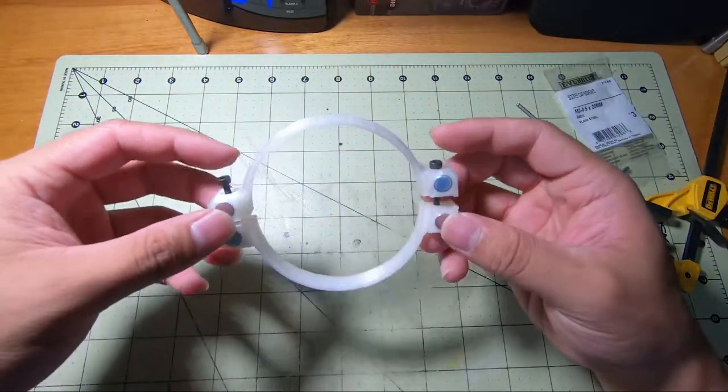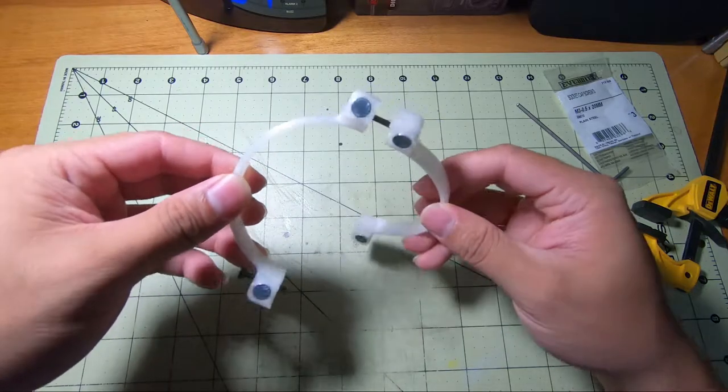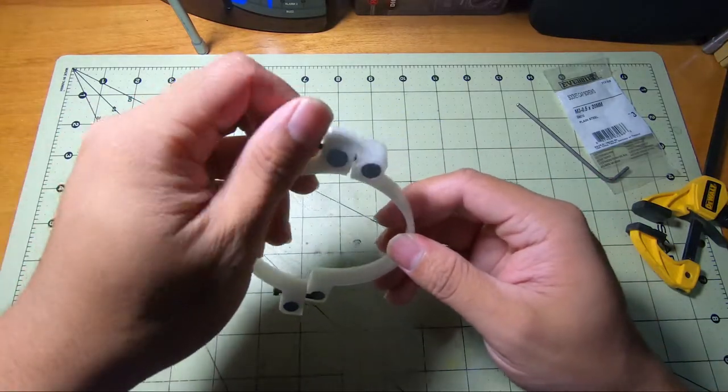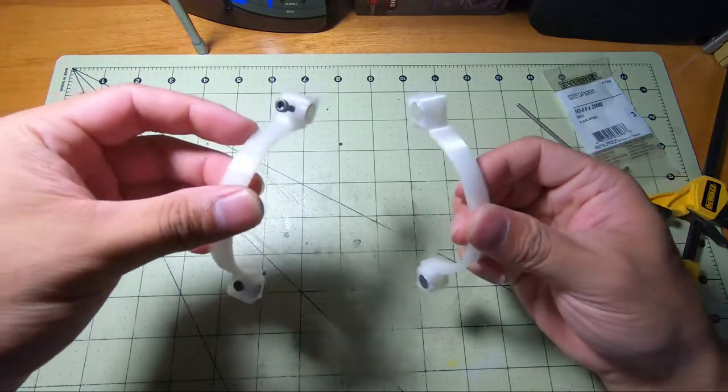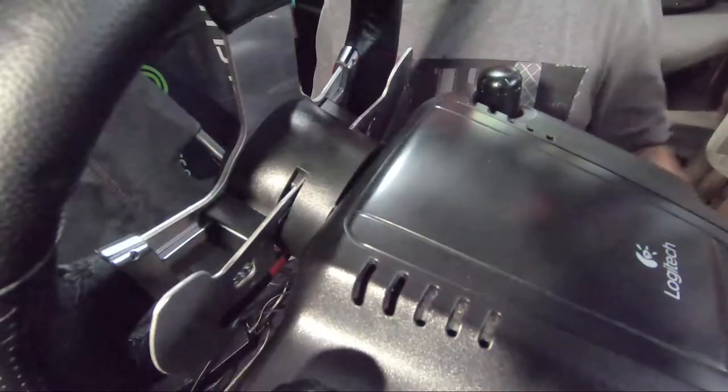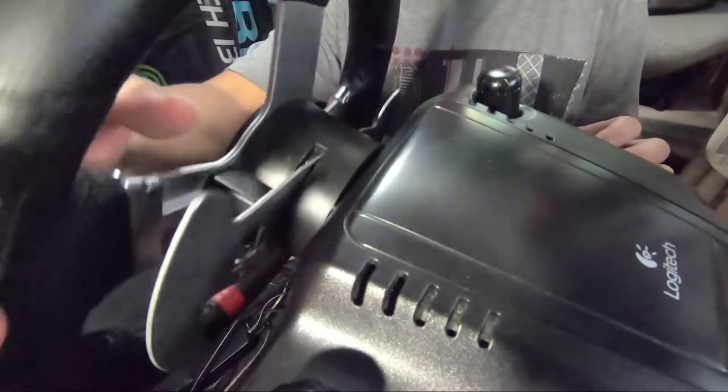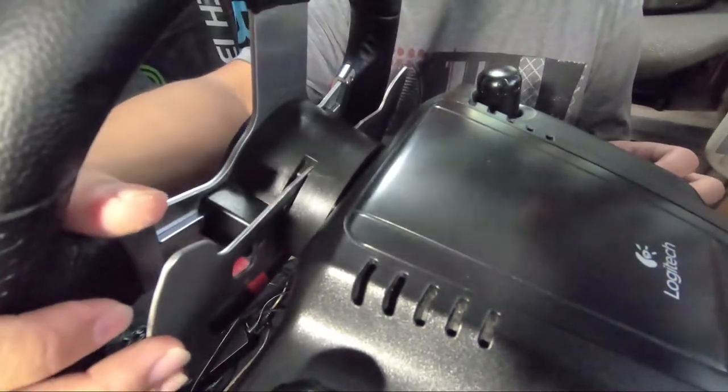I did the same process for the remaining magnets, and once that was finished, it was time to install the assembly onto my Logitech G27 wheel. Here's what my paddle shifter sounded like before I installed the mod.